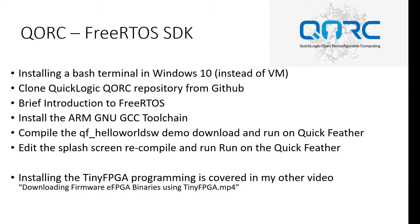The purpose of this video is to show you how to install a bash terminal in Windows 10 instead of a virtual machine, to clone the QuickLogic Quark repository from GitHub, to provide a brief introduction to FreeRTOS, to install the ARM GNU GCC toolchain, compile the Hello World demo program, download and run on the QuickFeather board, edit the splash screen on the Hello World program, recompile and run on the QuickFeather board. I don't plan to cover how to install the TinyFPGA programming tool because that is covered in my other video.